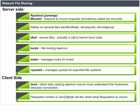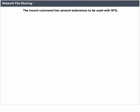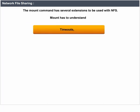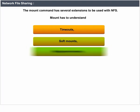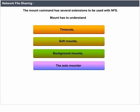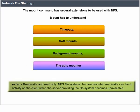The mount command has several extensions to be used with NFS. Mount has to understand timeouts, soft mounts, background mounts, and the auto-mounter. Rw or ro — read/write and read-only. NFS file systems that are mounted read/write can block activity on the client when the server providing the file system becomes unavailable.